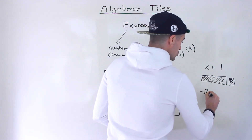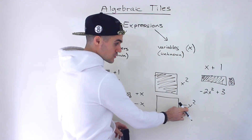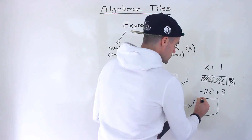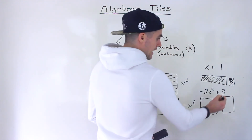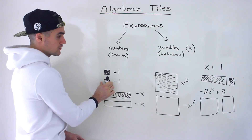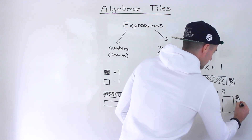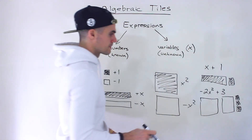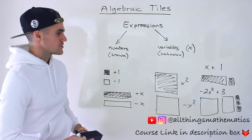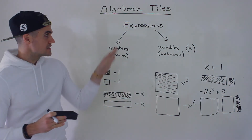What about something like negative two x squared plus three? We would put two large hollow squares — because it's negative x squared — giving us negative 2x². Then for the positive three we'd add three small filled-in squares. If it were minus three, we'd use three hollow small squares. Usually you'll see them lined up together. So negative two x squared is the two large hollow squares, and then we have the plus three as the three small filled-in squares. It's just a visual way to represent these expressions, and over the next couple of videos we'll do a bunch of examples with algebraic tiles.